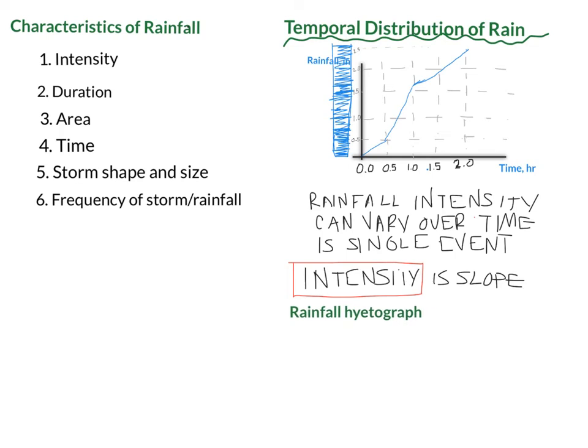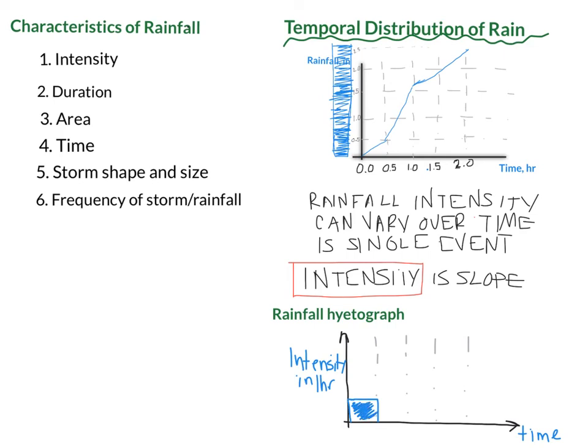If we make a figure of the intensity we call that a rainfall hyetograph. A rainfall hyetograph is going to be more like a bar chart. So I've tried to line up these axes right underneath the previous one. And so if I try to estimate, we know in that first half hour we got half an inch of rain in half an hour so that has an intensity of one inch per hour. And then it sped up and in the next half hour we got a full inch of rain so that would be an intensity of two inches per hour.